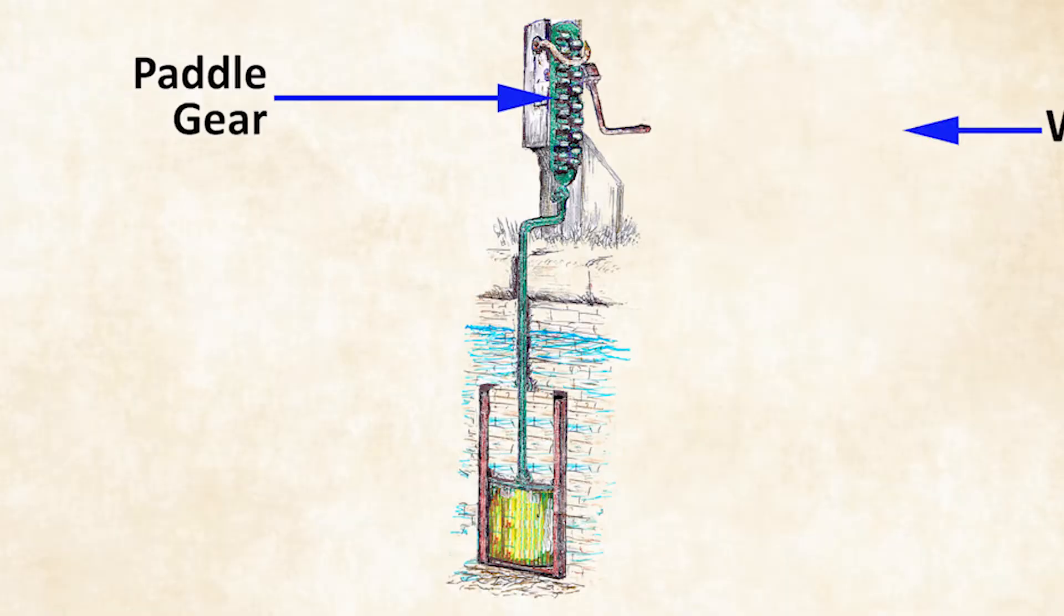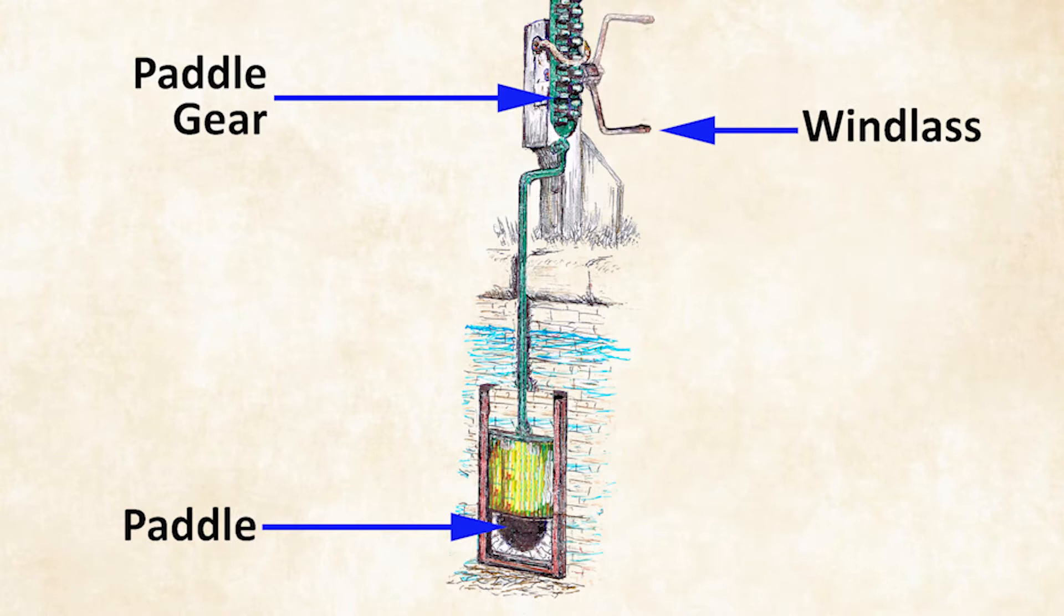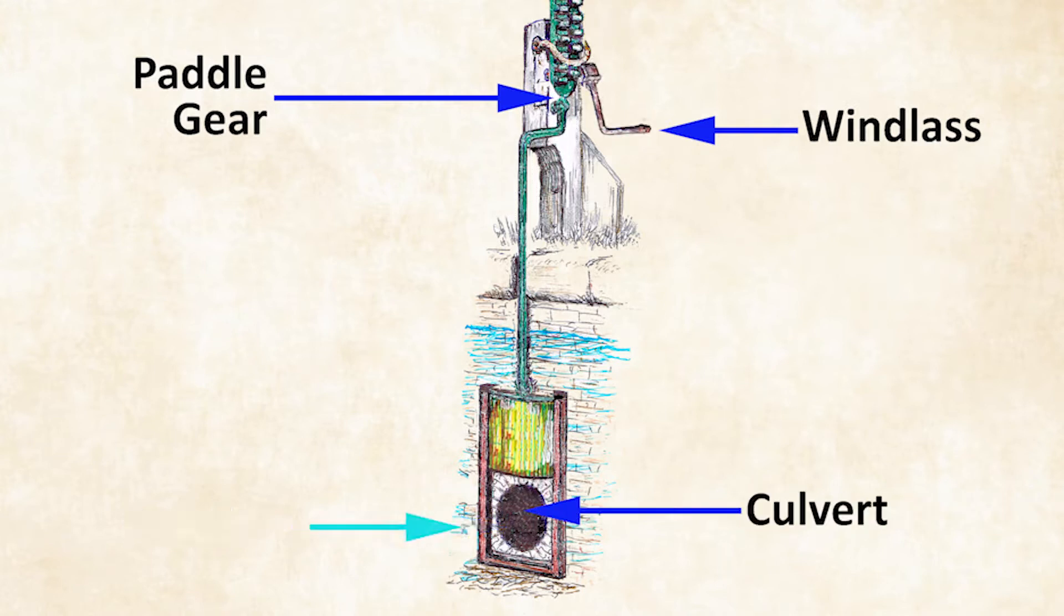The flow of water is controlled by various paddles. These paddles operated by a windlass are like sliding doors and allow water to run into or out of the lock.